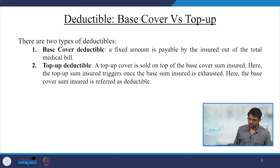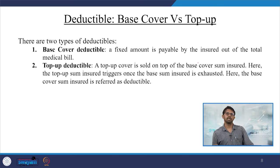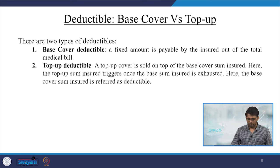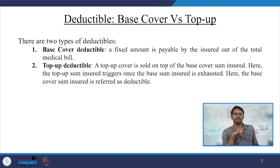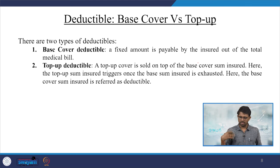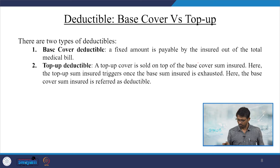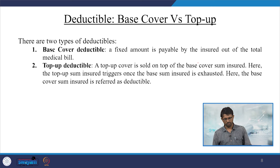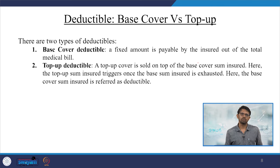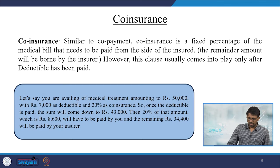Deductibles may cover the base or operate through a top-up. There are two types: base cover deductible and top-up deductible. In a base cover, a fixed amount is payable by the insured out of the total medical bill. In a top-up, the cover is sold on top of the base sum insured; the top-up sum insured triggers once the base sum insured is exhausted — hence the base cover sum insured is referred to as the deductible.